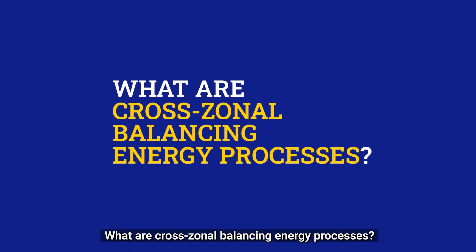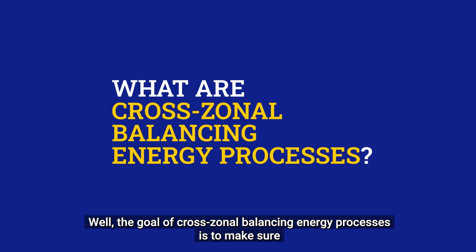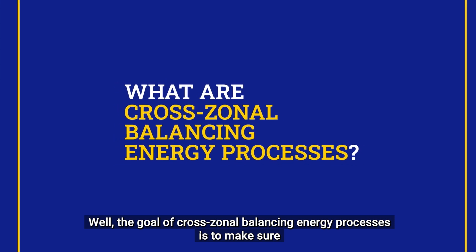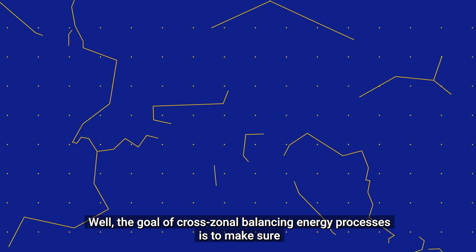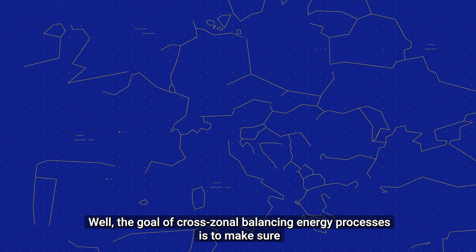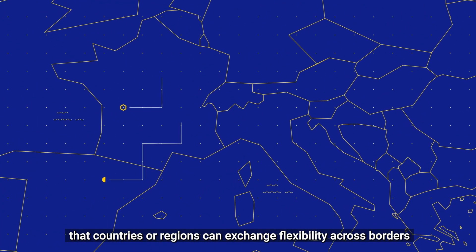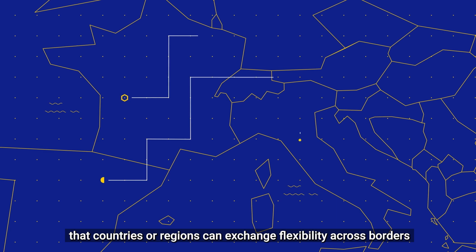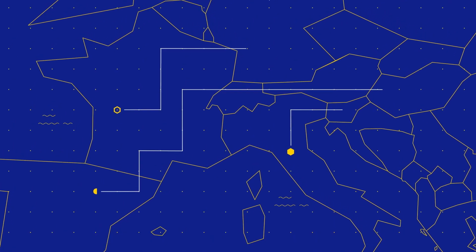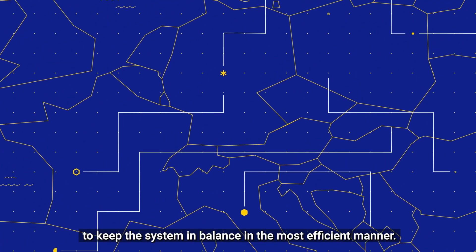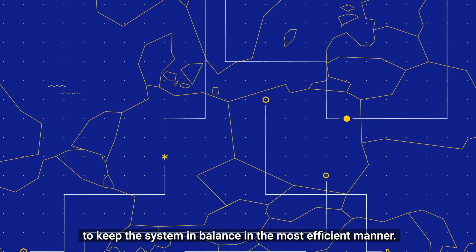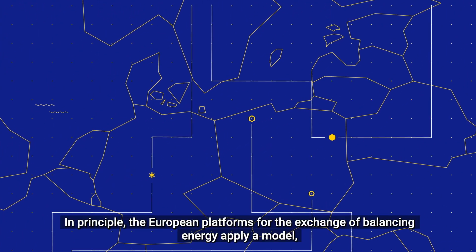What are cross-zonal balancing energy processes? The goal of cross-zonal balancing energy processes is to make sure that countries or regions can exchange flexibility across borders to keep the system in balance in the most efficient manner.